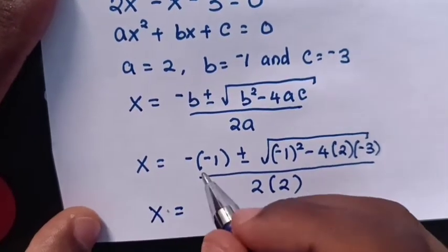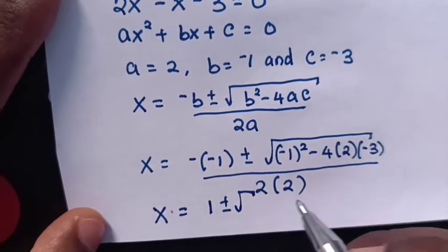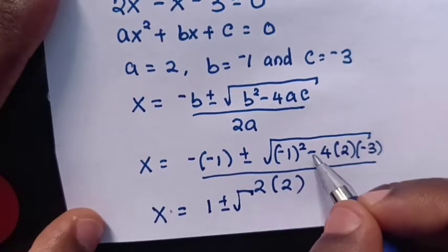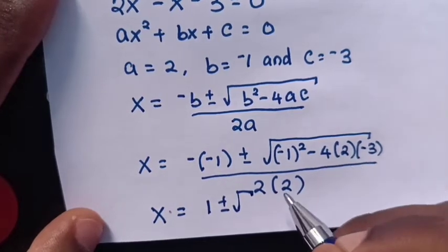Then x equals 1 plus or minus square root of 1, and negative times negative is positive, 1 plus 24,